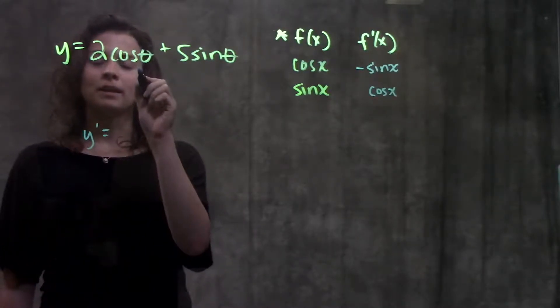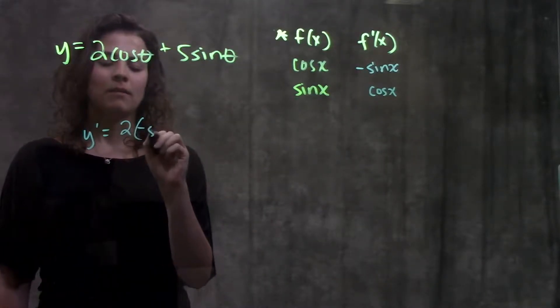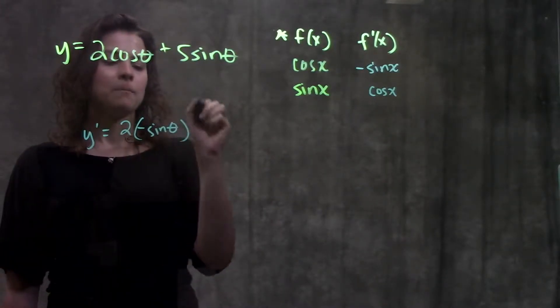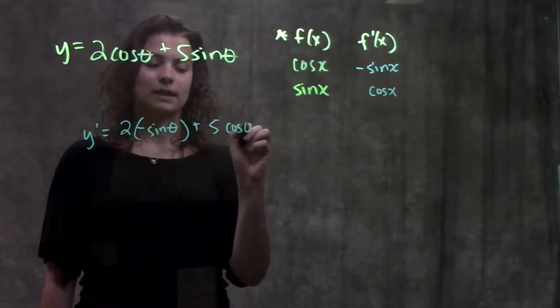For this first part here, I have two cosine theta. The derivative of cosine is minus sine, so this becomes two times minus sine theta, plus the derivative of five sine theta, which becomes five cosine theta.